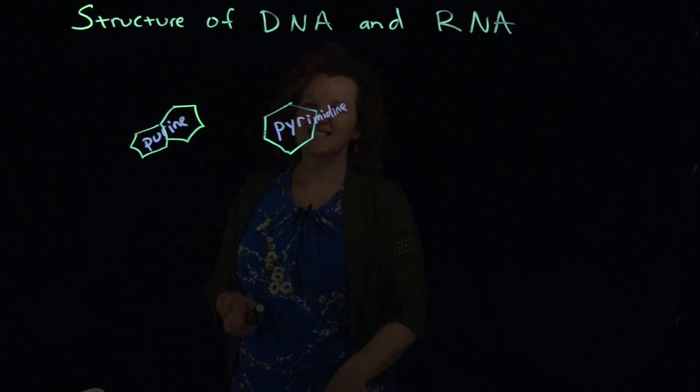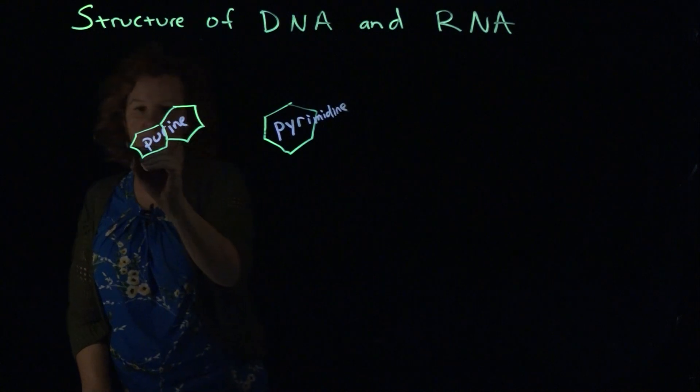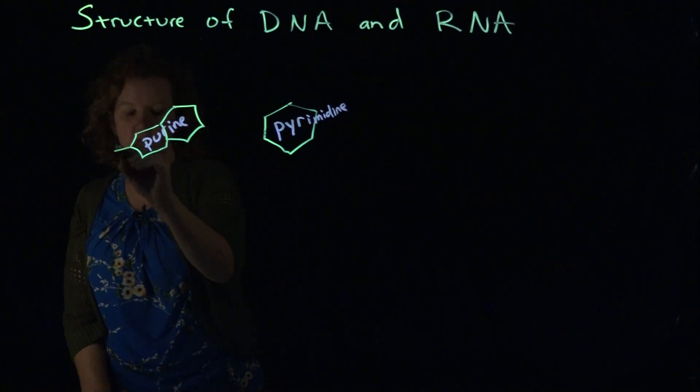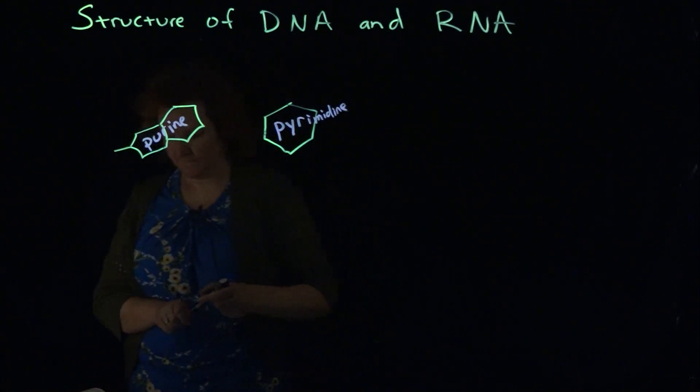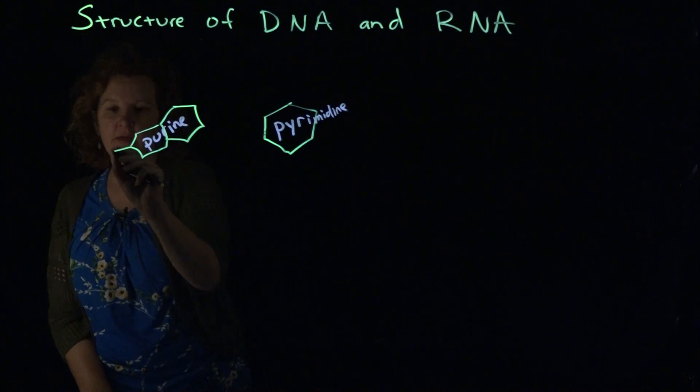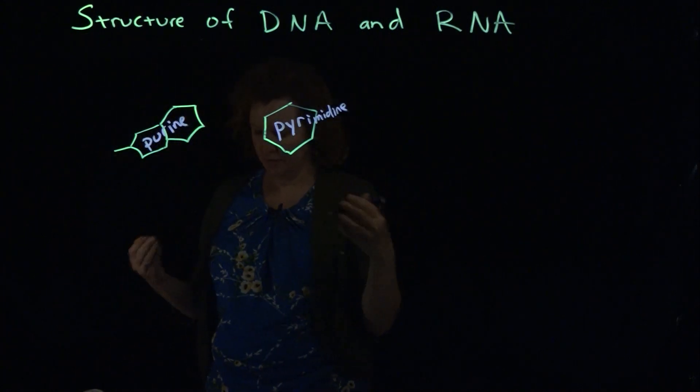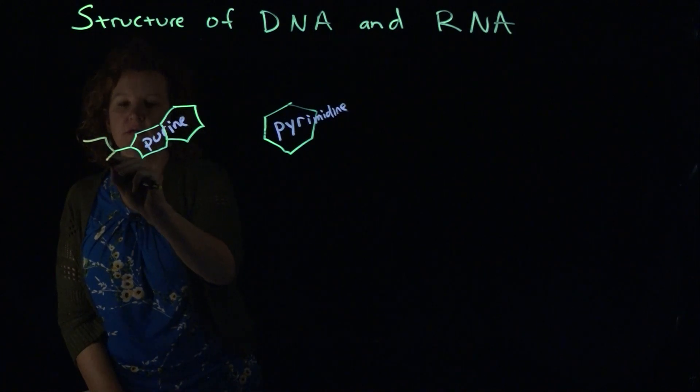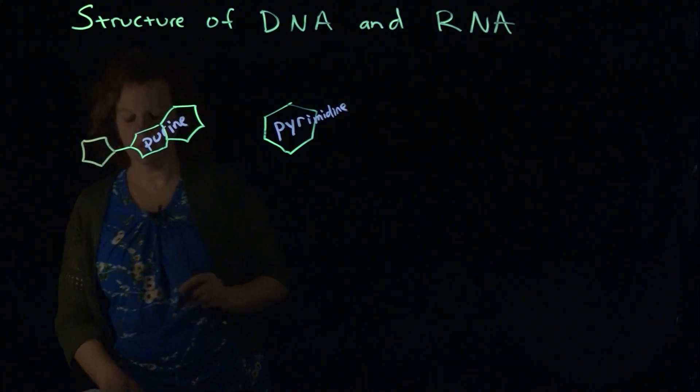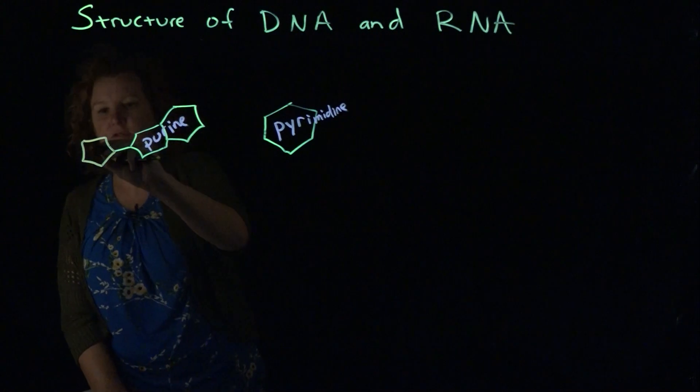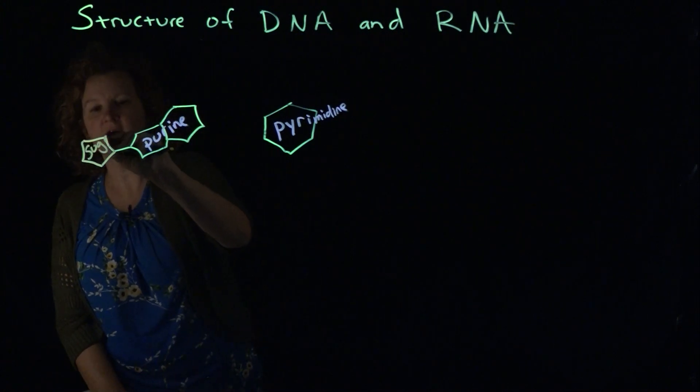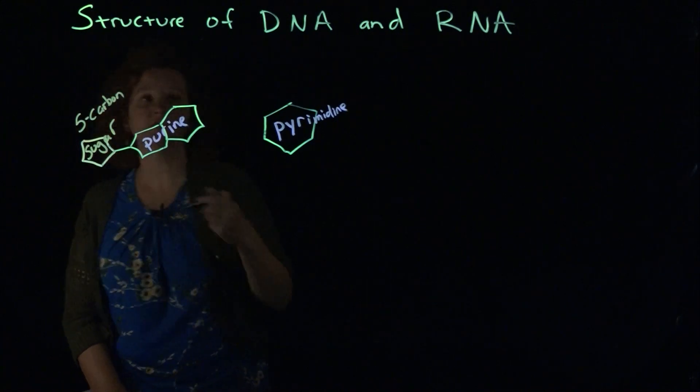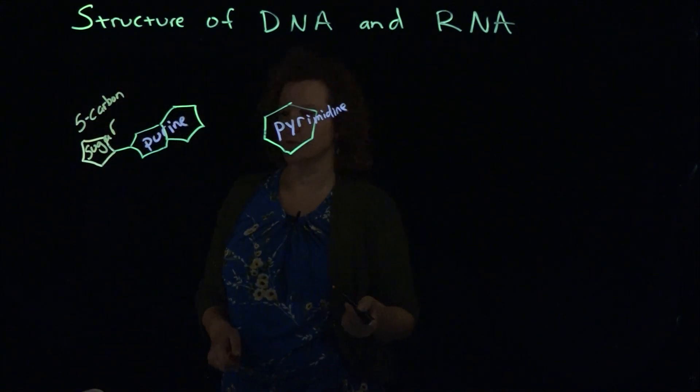In DNA, that sugar is deoxyribose. That's where the D comes from in DNA. And the sugars can be oriented in an up or down conformation. This is our sugar, sometimes called a five-carbon sugar, but the very specific name would be deoxyribose.